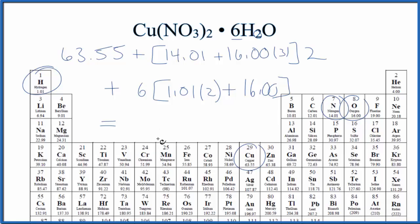If we add all of that together, we end up with 295.69 grams per mole. And that's the molar mass of the copper 2 nitrate hexahydrate.